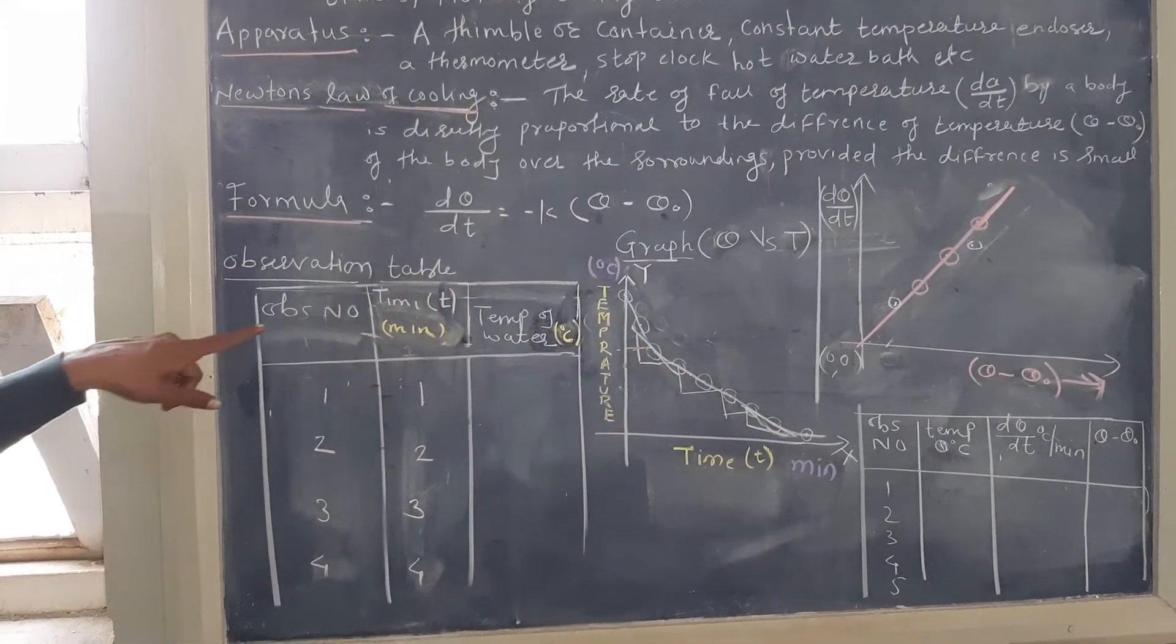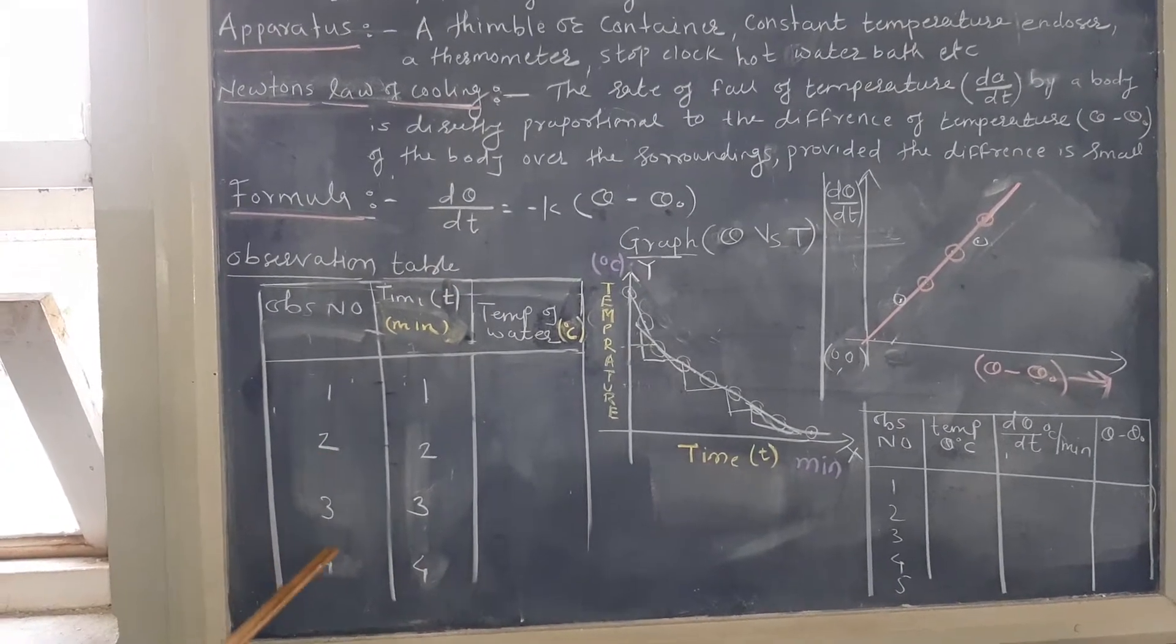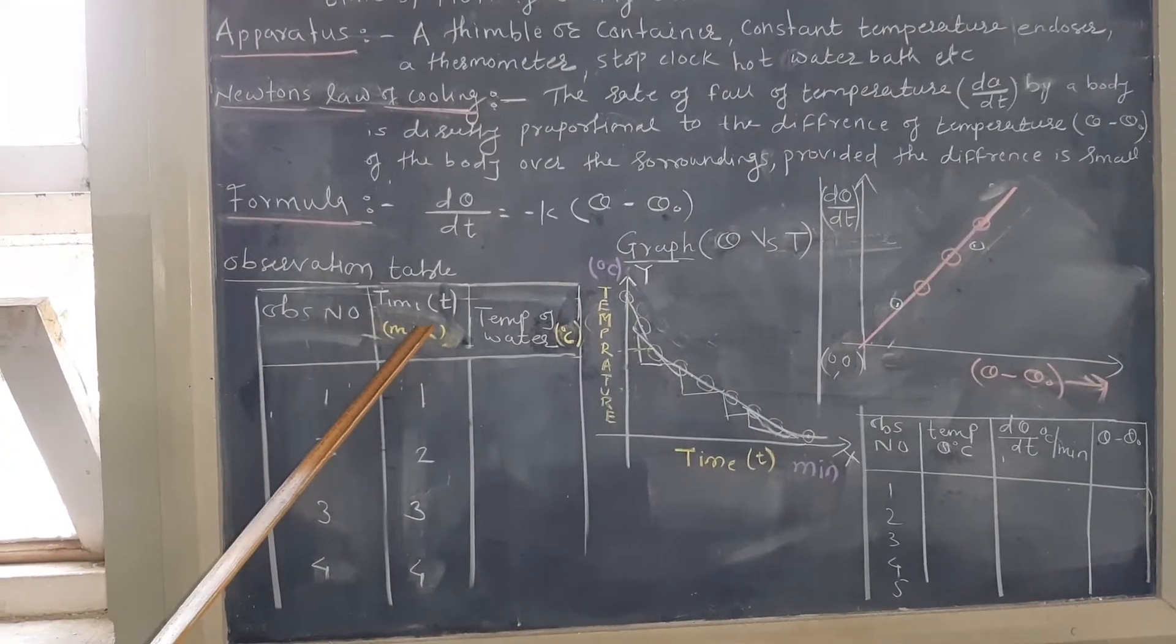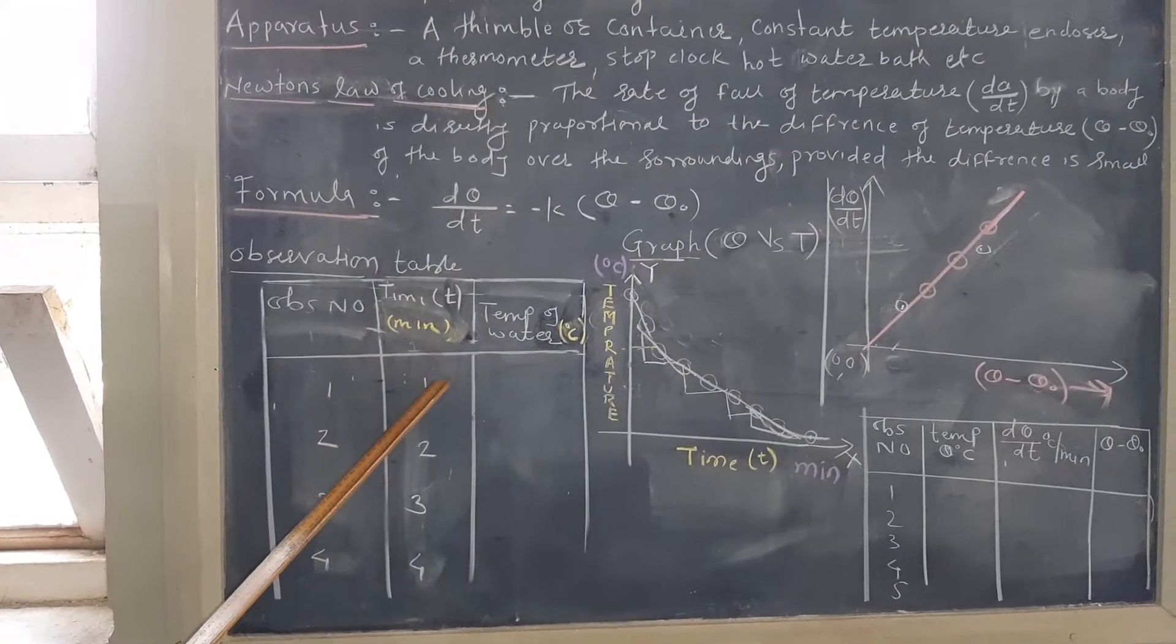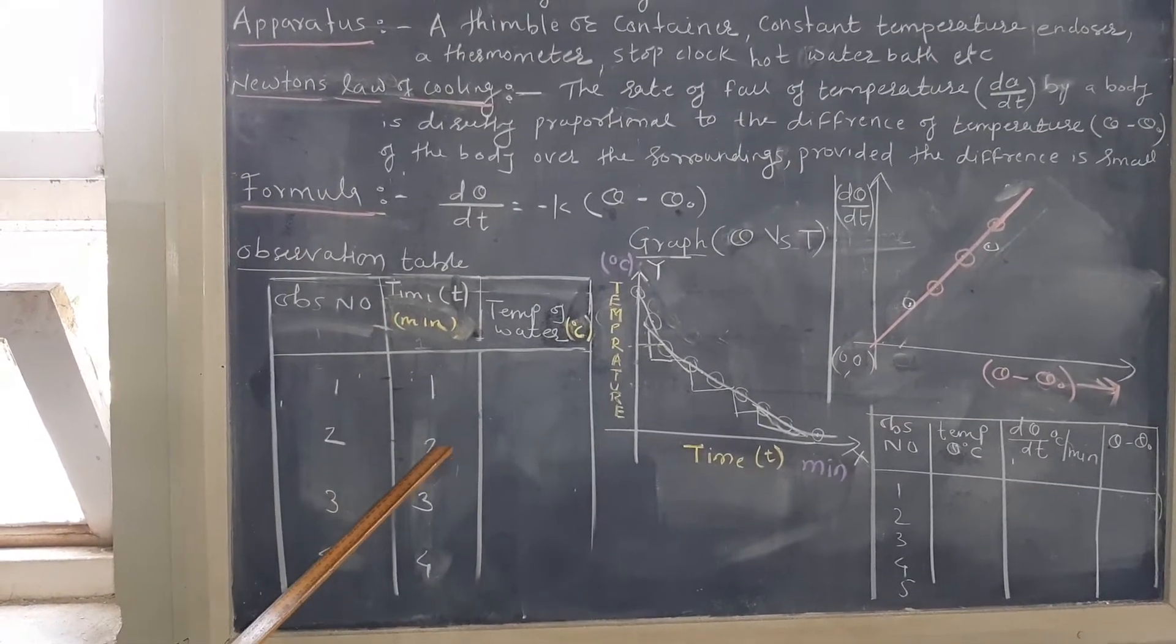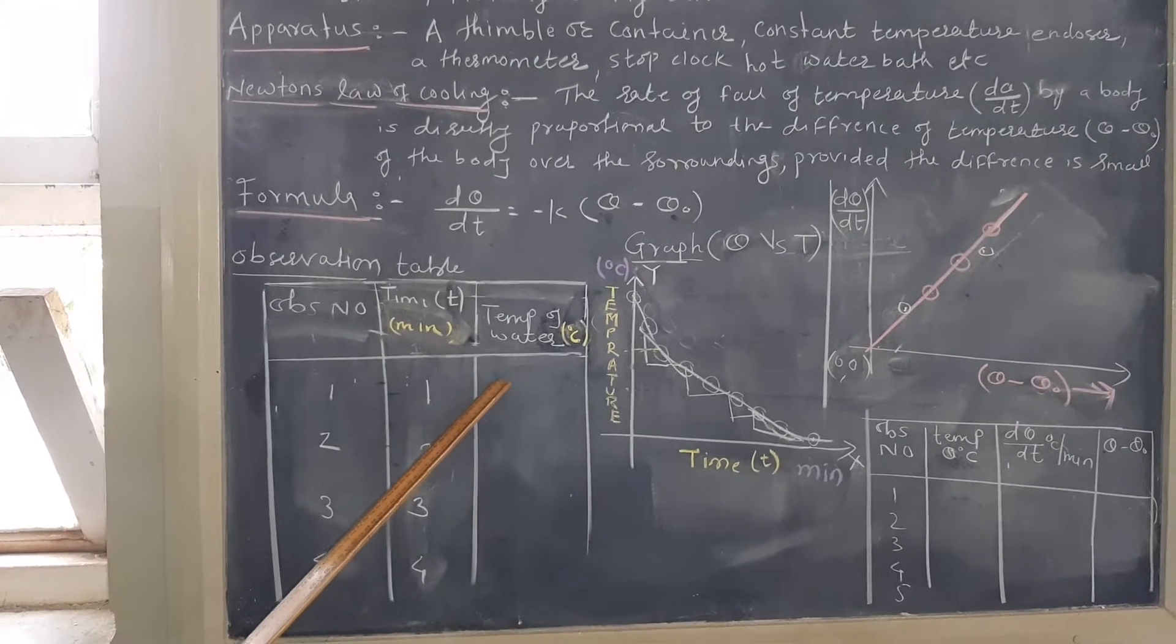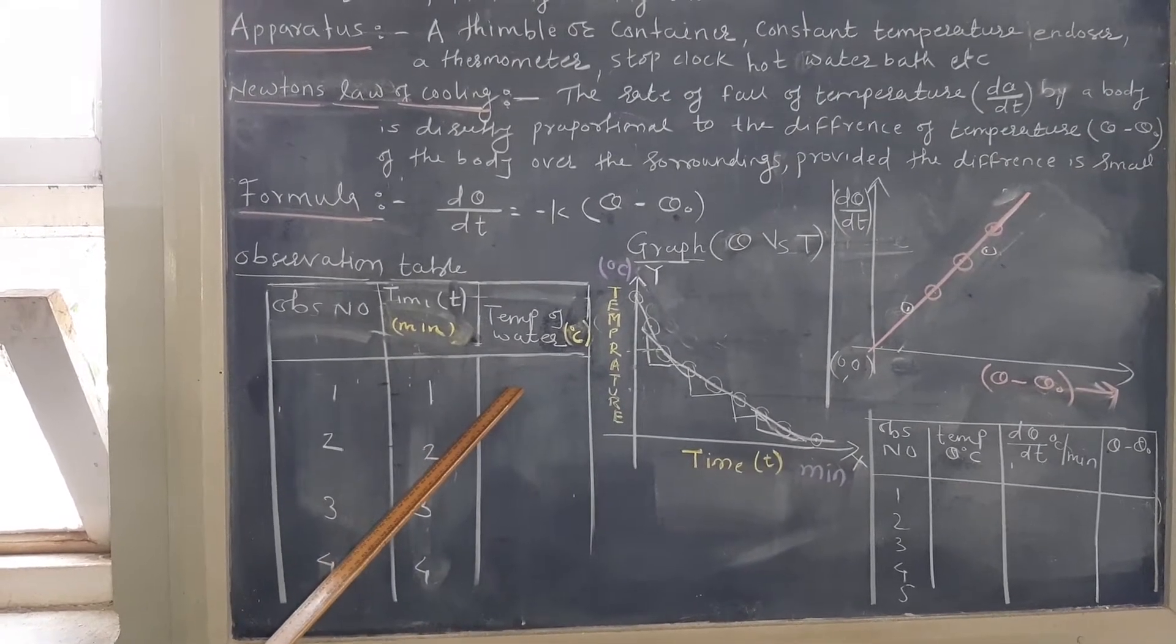Observation table: observation number 1, 2, 3, 4. Here we need time in which after every 1 minute interval we need to write the corresponding temperature.